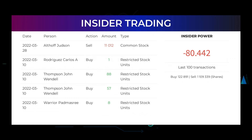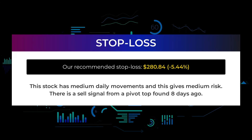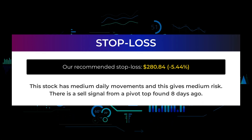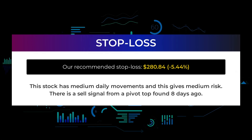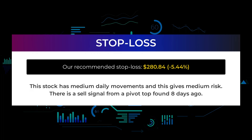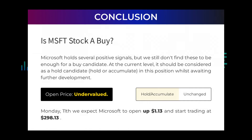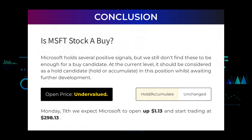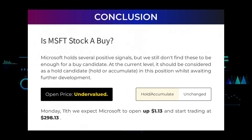Our recommended stop loss is $280.84, representing minus 5.44%. This stock has medium daily movements, giving medium risk. There is a sell signal from a pivot top found eight days ago. Microsoft holds several positive signals, but we still don't find these to be enough for a buy candidate at the current level. It should be considered as a hold candidate — hold or accumulate in this position whilst awaiting further development. After analyzing volatility and movements for the last trading day, our systems find the current price is undervalued. For trading on Monday the 11th, we expect Microsoft to open up $1.13 and start trading at $298.13.